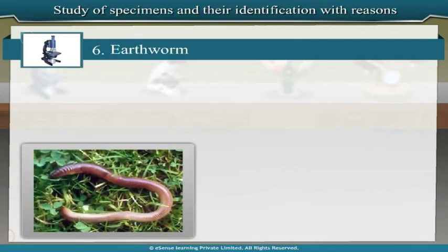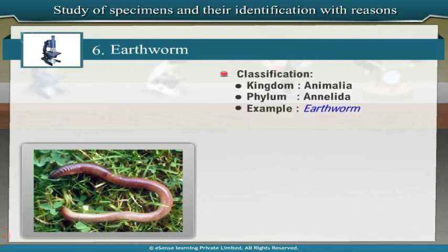Observe the specimen of earthworm and note. Earthworm belongs to the phylum Annelida of kingdom Animalia. Since the body is metamerically segmented and there are nephridia as excretory organs, earthworm is included under phylum Annelida.